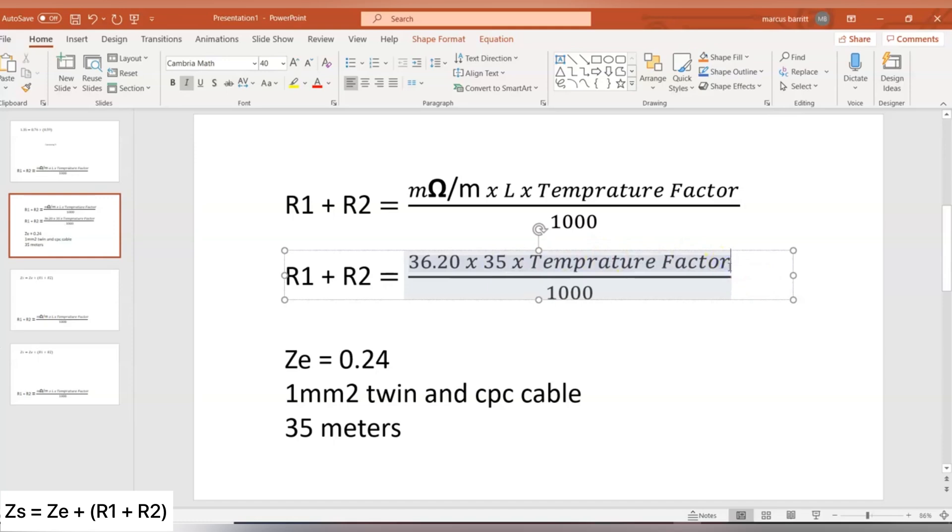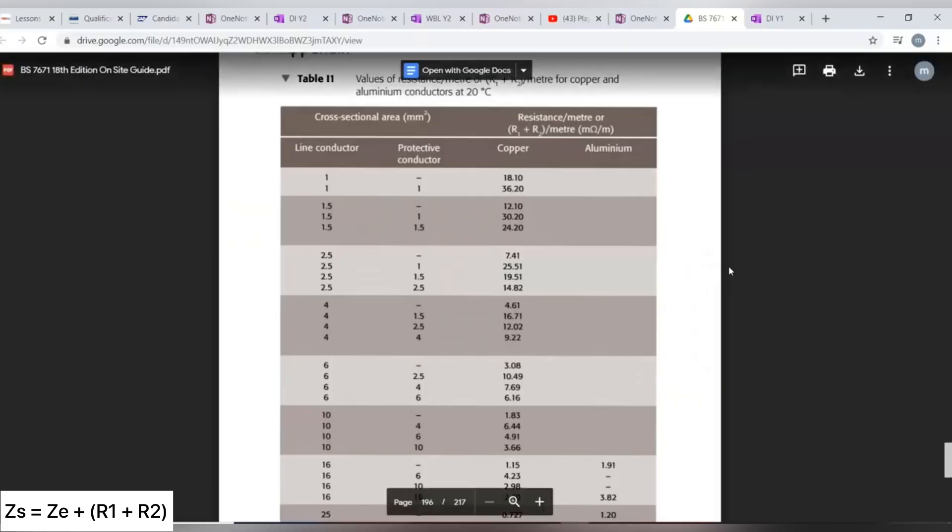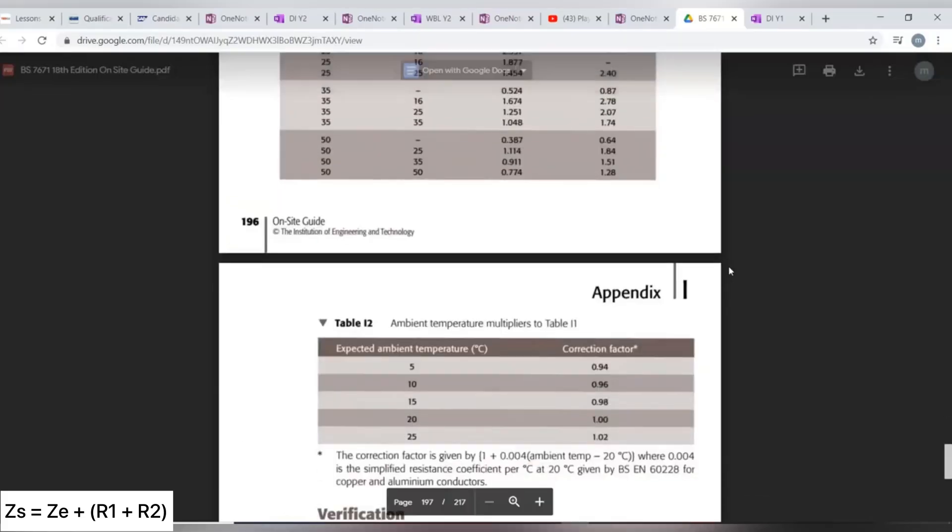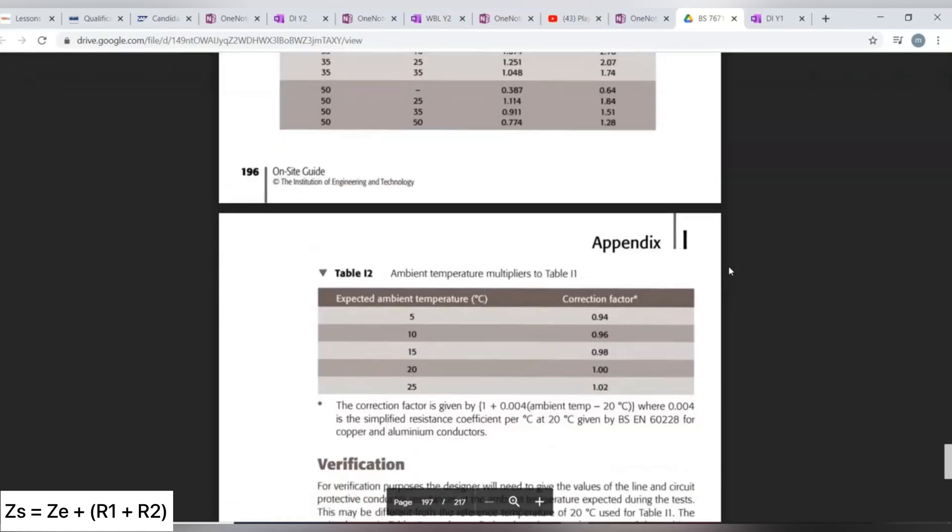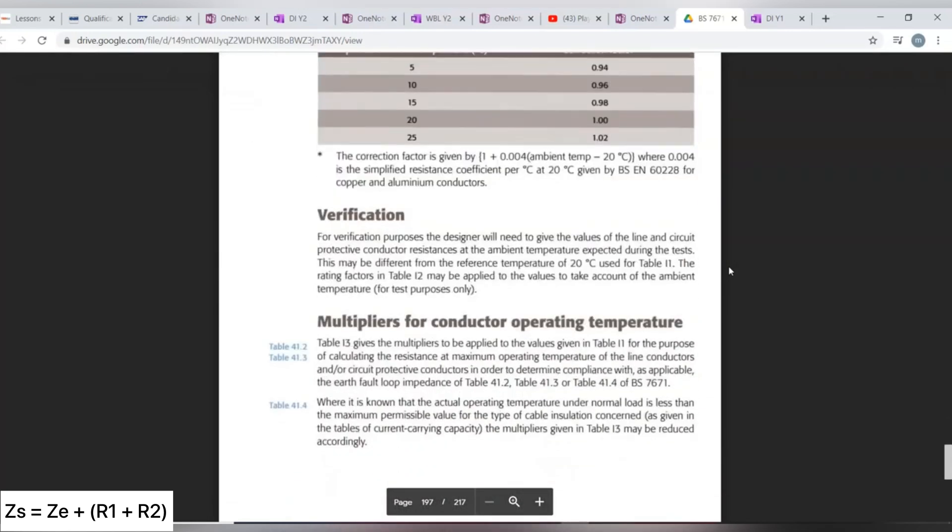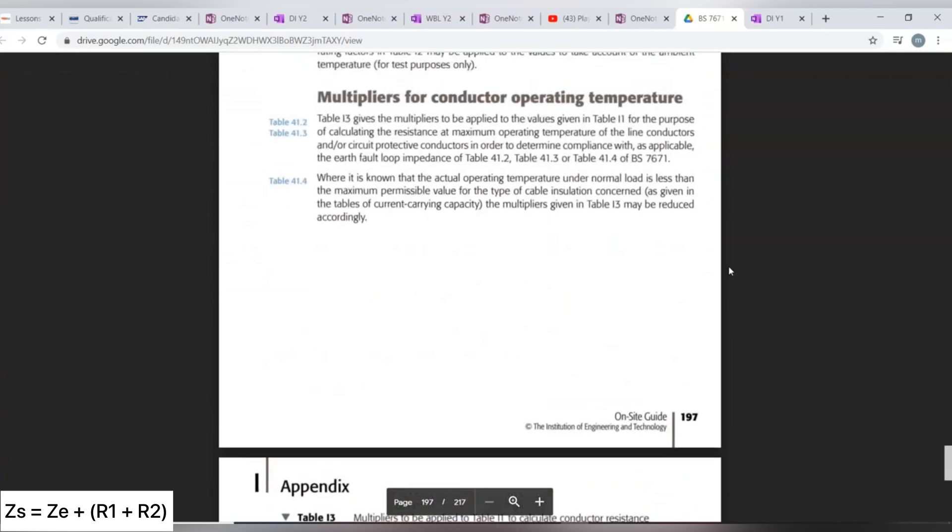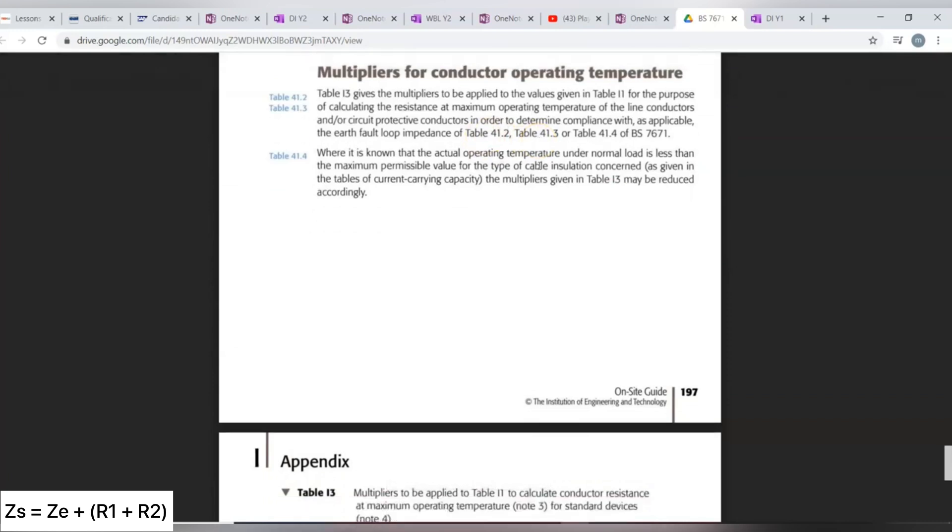And then the temperature factor—we go back to the on-site guide, and remember what table we're going to use because we're calculating against that of BS7671, and they have the maximum permissible fault loop impedance in tables 41.2, 41.3, which we just looked at, we have to use table I3.